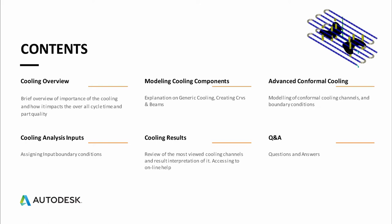We'll start with a cooling overview — a brief overview of the importance of cooling and how it impacts overall cycle time and part quality. Then we'll look at cooling component modeling: creation of cooling channels, creation of curves, giving attributes, modeling of beams, and advanced cooling known as conformal cooling. We'll also look at the cooling channel workflow, assigning boundary conditions, and cooling inputs — the different types of coolants we can use to cool the mold.